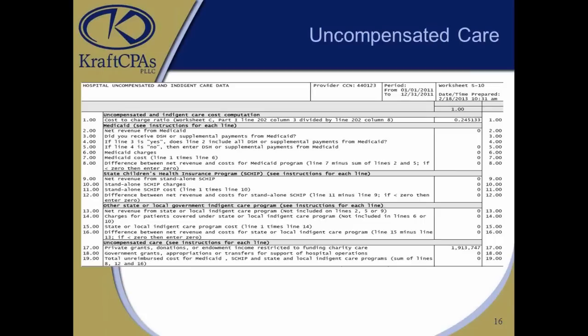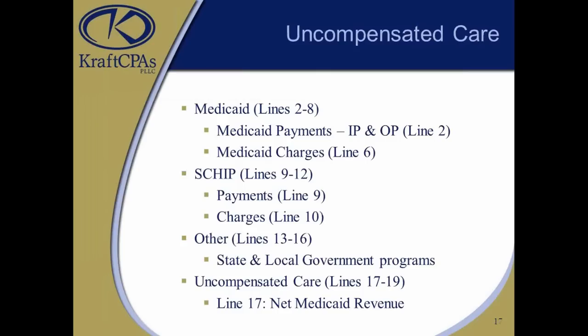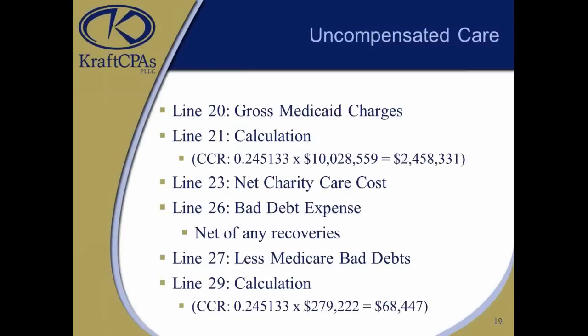On slide 19, I want to warn you on a couple of items. Line 21 uses your cost-to-charge ratio. Unless you're cost-based or critical access, the cost-to-charge ratio really doesn't impact you unless you have a lot of outliers. This is changing in the future — Scott will get into more detail on that, so take a mental note. Also, line 26, your bad debt expense, must be net of any recoveries.